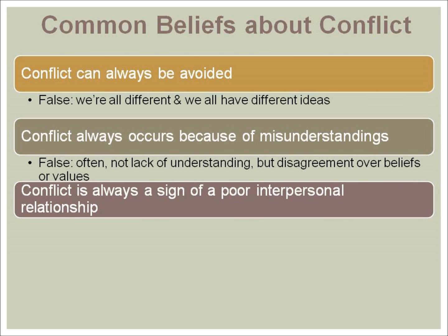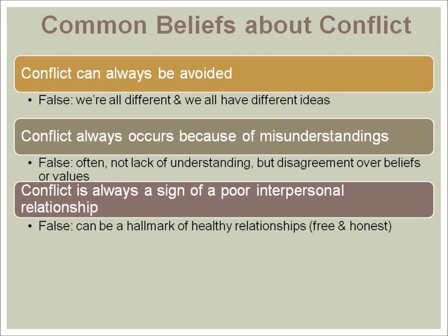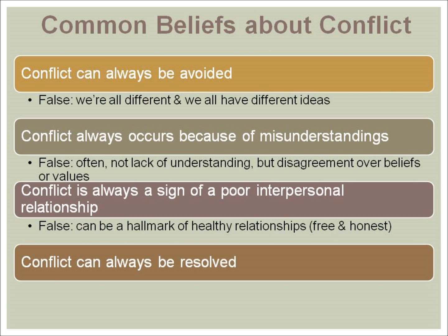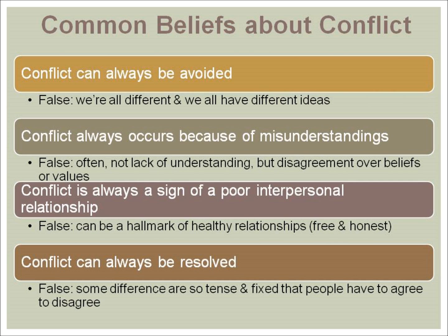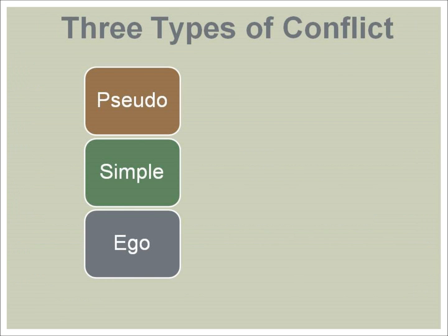True or false? Conflict is always a sign of a poor interpersonal relationship. The answer is false. Conflict can be a hallmark of healthy relationships and free and honest communication. True or false? Conflict can always be resolved. And this answer is false. Some differences are so tense and fixed that people have to agree to disagree. There are three types of conflict: pseudo, simple, and ego.